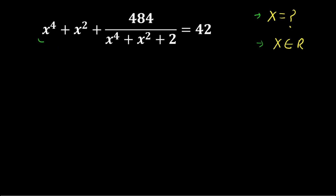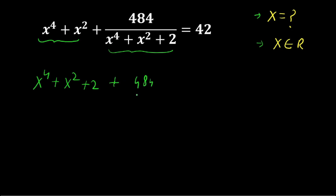Look carefully — on the left hand side we have x⁴ + x² in both the numerator and denominator. If we add 2 to both sides, then the left hand side becomes (x⁴ + x² + 2 + 484) divided by (x⁴ + x² + 2), and the right hand side becomes 42 + 2, which is 44.